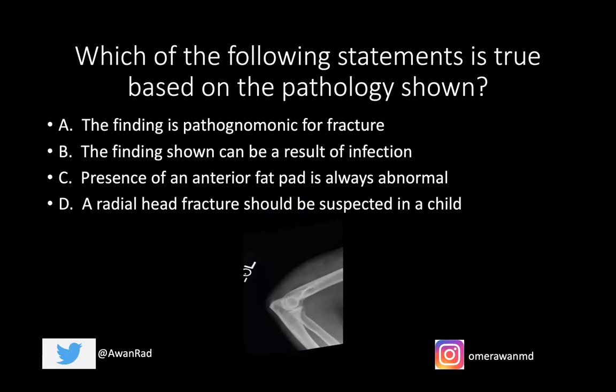Is the finding pathognomonic for fracture? Can the finding be seen as a result of infection? Is the presence of an anterior fat pad always abnormal? Or should a radial head fracture be suspected in a child? Which of those statements is actually true? I'll give you a couple of seconds to ponder what you think the answer is.